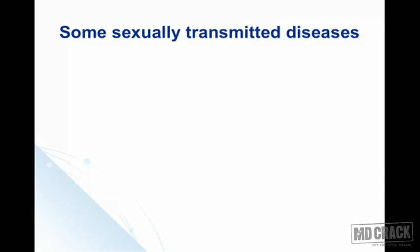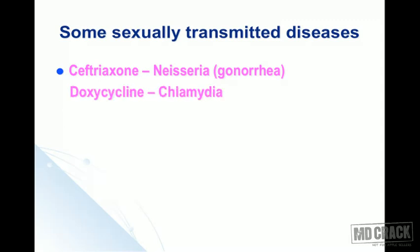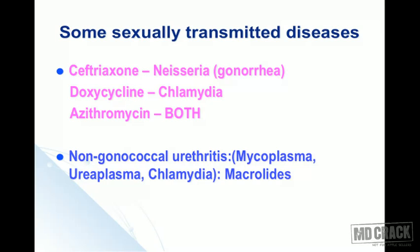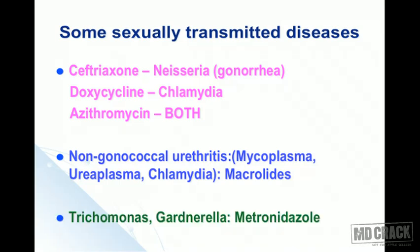An overview of sexually transmitted diseases: ceftriaxone is the drug of choice for resistant Neisseria gonorrhoeae; doxycycline is the choice for chlamydial infections; azithromycin can be used for both gonorrhea and chlamydia. For non-gonococcal urethritis caused by Mycoplasma, Ureaplasma, or Chlamydia, macrolides are appropriate. For Trichomonas and Gardnerella, metronidazole is the choice.